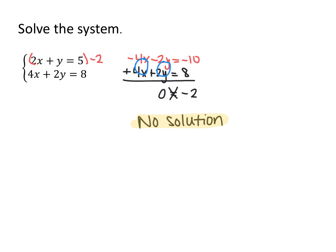Whenever you solve a system of equations and all your variables eliminate and you end up with a false statement like 0 equals negative 2, that means no solution — those are parallel lines that never intersect. If you end up with a true statement after all variables have eliminated, like 0 equals 0, that is your dependent equations — infinitely many solutions.